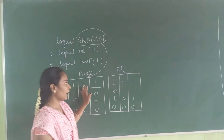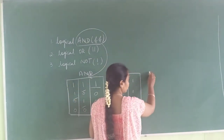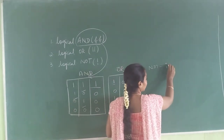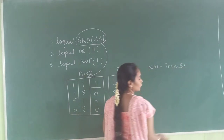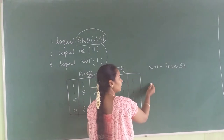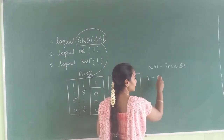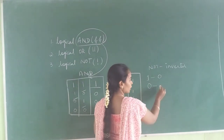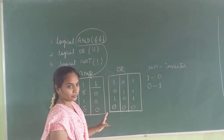Coming to NOT — NOT is nothing but an inverter. If you take the input value as true, it gives the result as false. If you take the input as false, it gives the result as true.